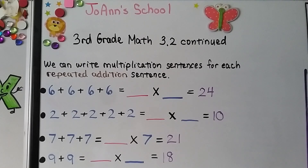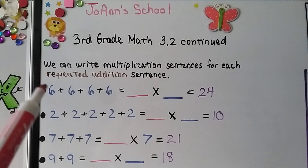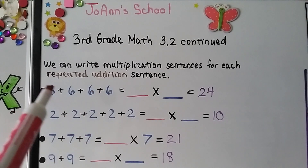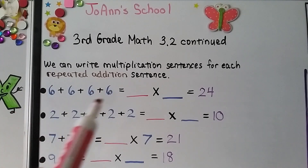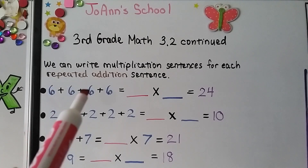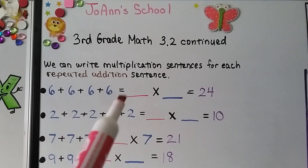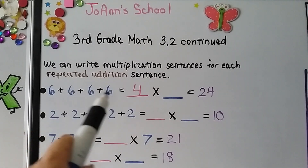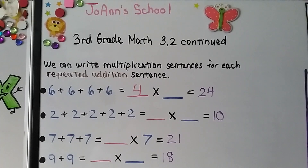We can write multiplication sentences for each repeated addition sentence. Here we have six plus six plus six plus six. We count one, two, three, four — we have four groups of six, and there's six in each group. Four times six is equal to twenty-four.